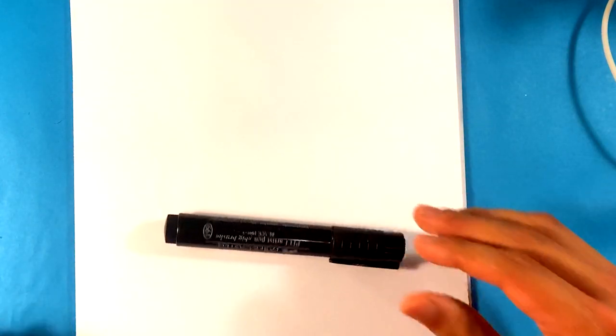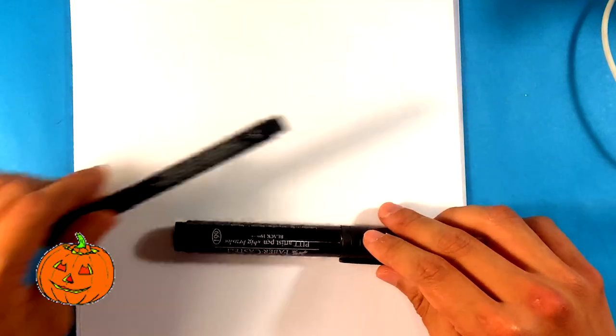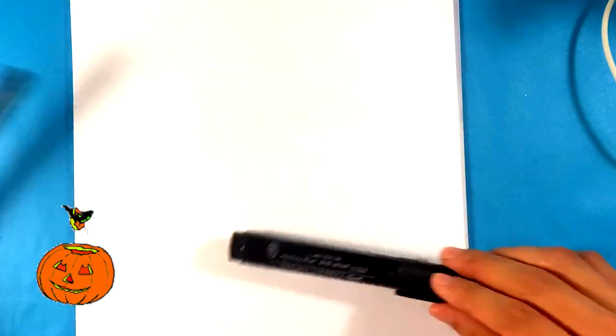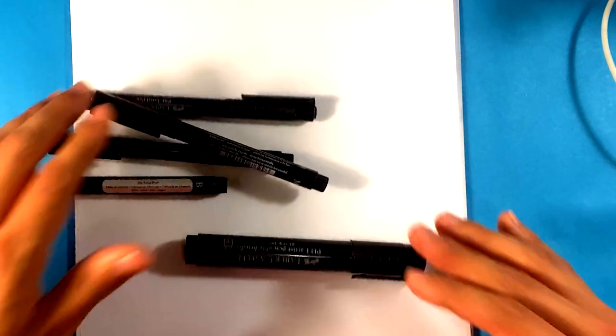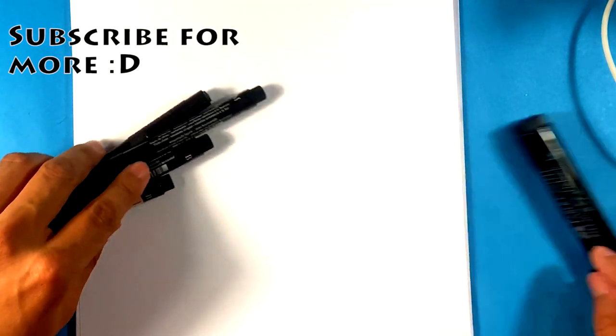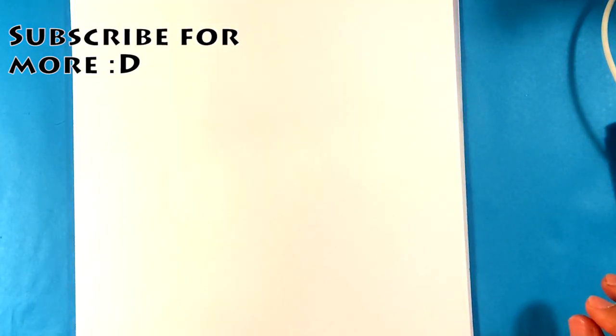We're going to do this slowly and easily so that beginners understand it. This is for beginners, step-by-step. I'm going to be using a Faber-Castell PITT Artist Pen, and probably a variation of that. I'm going to use a thinner one this time.